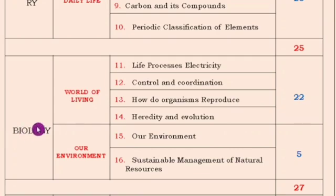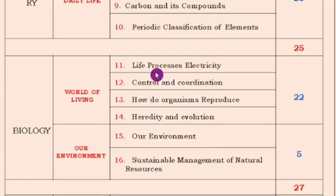The next subject is biology. In biology there are 6 chapters: life process, control and coordination, how organisms reproduce, and heredity and evolution. These are very important — for these lessons you will get 22 marks. For control and coordination, you must remember the brain diagram. Concentrate especially on the glands and hormones — which hormones are produced, which glands produce them, what type, and what their function is. If they ask a diagram it will be for 4 marks, and the remaining concepts for 1 to 2 marks.